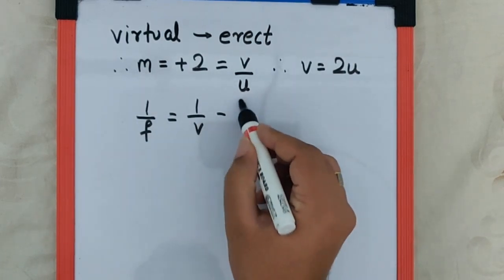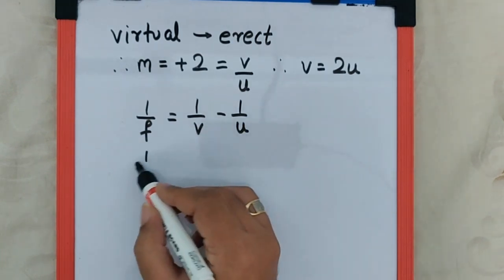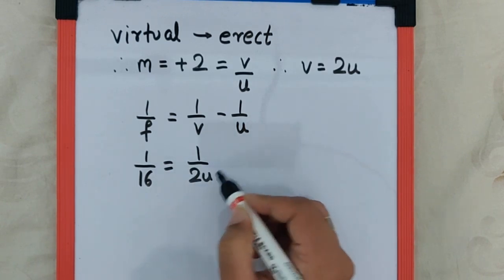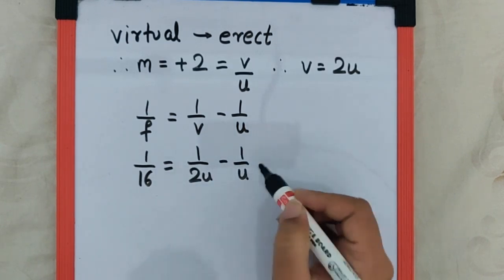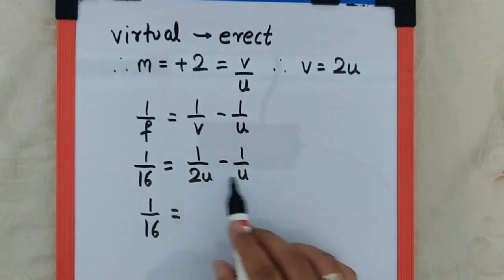If we substitute the values we get 1 by 16 is equal to 1 by 2u minus 1 by u, which means 1 by 16 is equal to half minus 1, which is minus 1 by 2u.